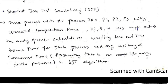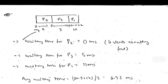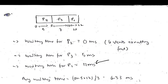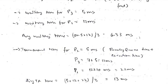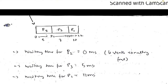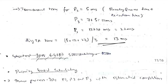Shortest Job First (SJF, non-preemptive): The process that completes fastest is given the first opportunity. P2 (5ms) eats first, then P3 (7ms), then P1 (10ms). Waiting times: P2=0, P3=5, P1=12; average waiting time = (0+5+12)/3 = 5.67ms. Turnaround times are waiting time plus execution time for each process, divided by 3 for the average.